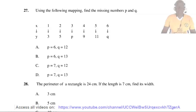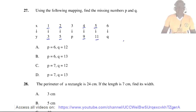Question 27. Using the function mapping, find the missing numbers P and Q. From the mapping, it can be observed that the rule is 2 times the input plus 1: 2×1+1=3, 2×2+1=5, 2×4+1=9, 2×5+1=11. Therefore P equals 2×3+1 which equals 7, and Q equals 2×6+1 which equals 13. The answer is D.